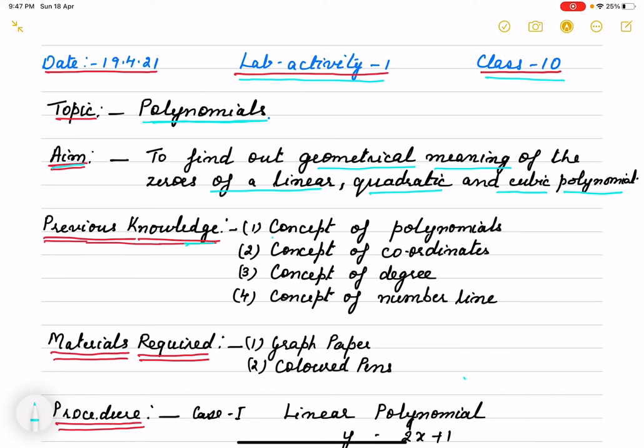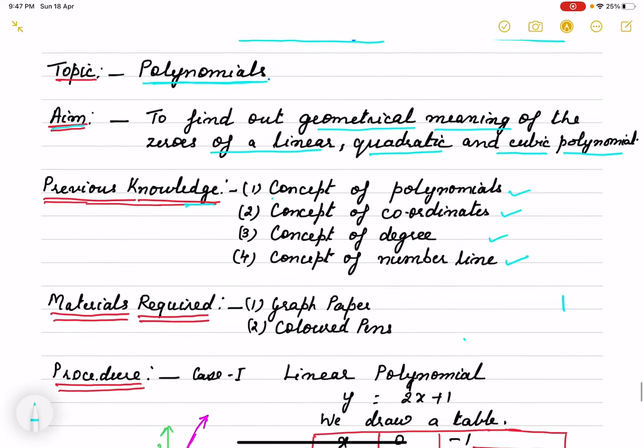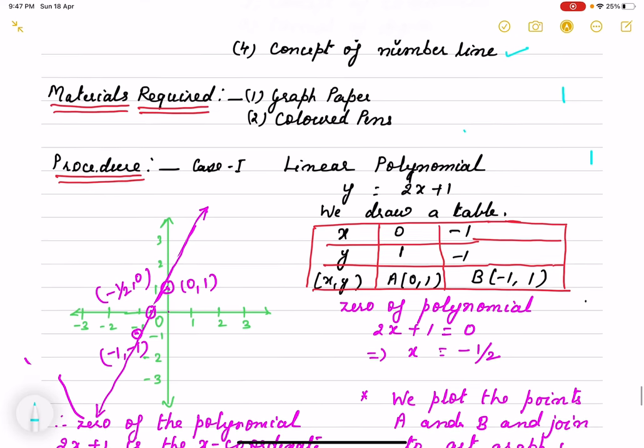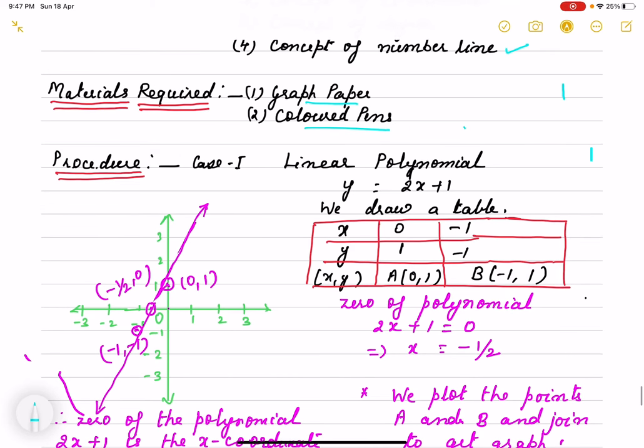What are the previous knowledge? Concept of polynomials, concept of coordinates, degree and number line. Materials required are graph paper and colored pens. You can also take fevicol, black pen, scissors.